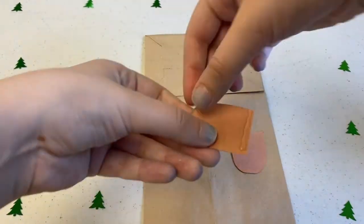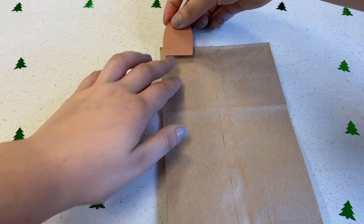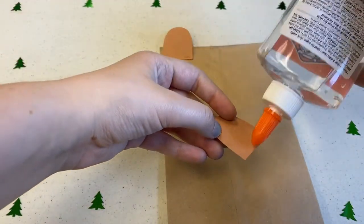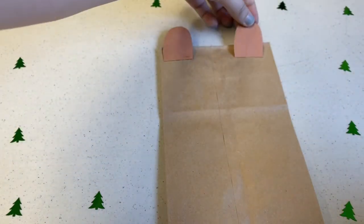The last two half ovals will be our ears. We'll be gluing these on the back of the bag along the top so they stick up and can be seen from the front just like so.